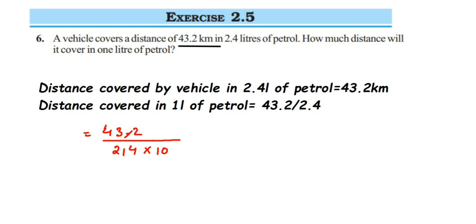There is one digit after the decimal point, so we get 10 here as well. But this 10 will go to the numerator — it gets reciprocated and goes to the numerator. I have explained why in the previous fifth question, so I'm not going to explain it again here. So this is equal to — I'm going to rewrite it — the 10 and 10 will get cancelled. We have removed the decimal points and now it is 432 upon 24.